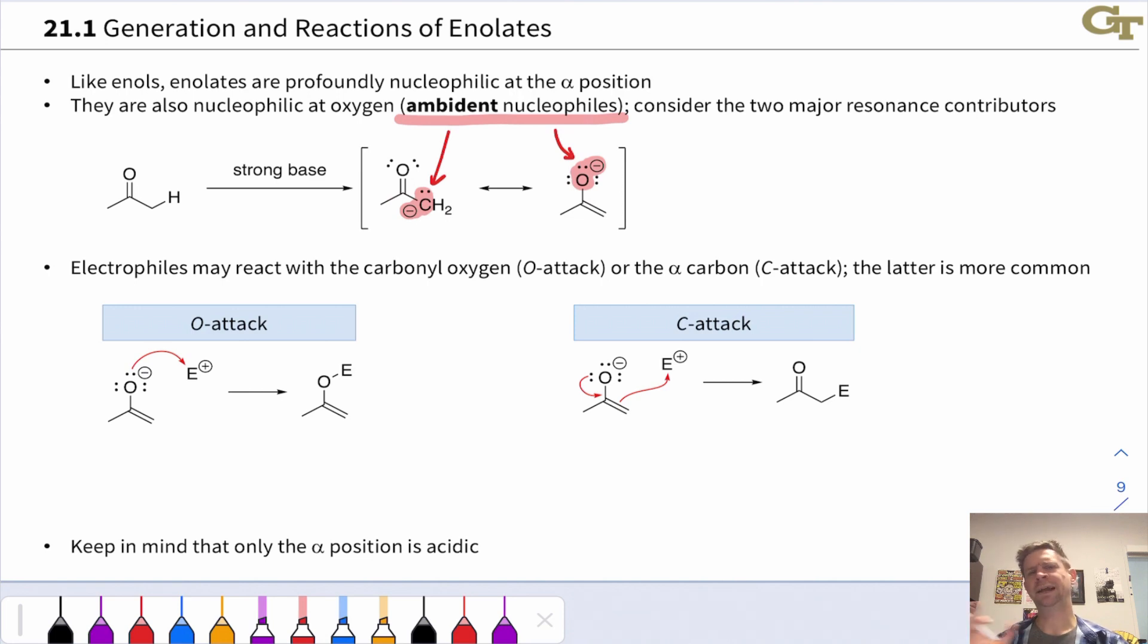In general, electrophiles can react with either the oxygen or the alpha carbon to give two different products. If an electrophile reacts with the oxygen, we get something that resembles an enol ether or something along those lines with some functional group connected to the enol oxygen, and the basic enol structure sort of still built in here with the carbon-carbon double bond. This is usually undesirable.